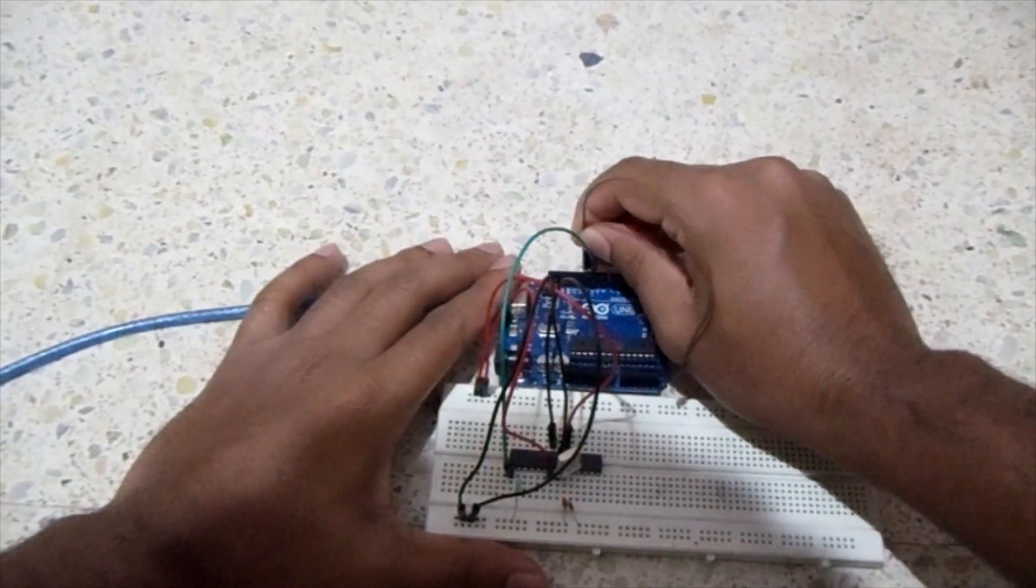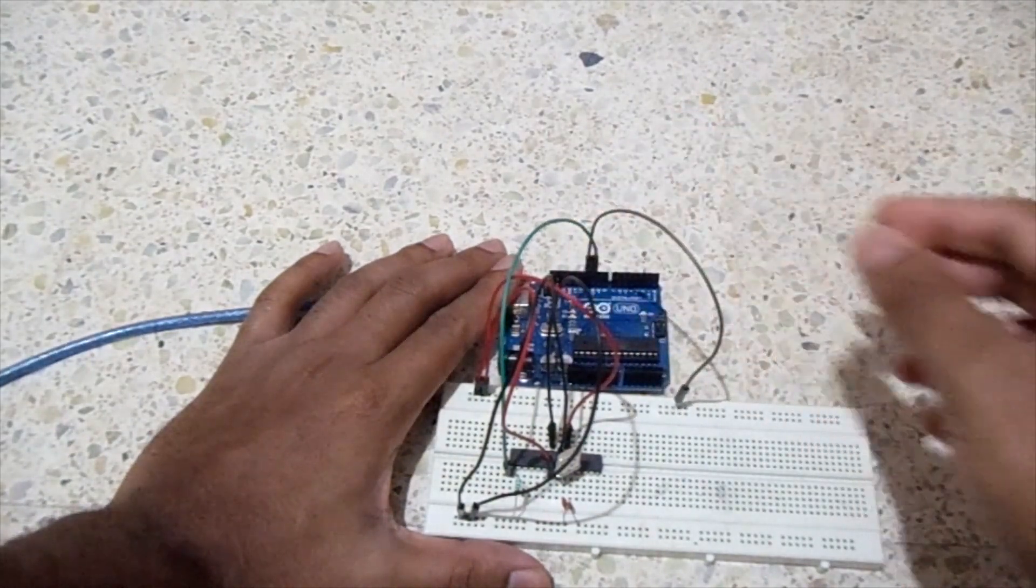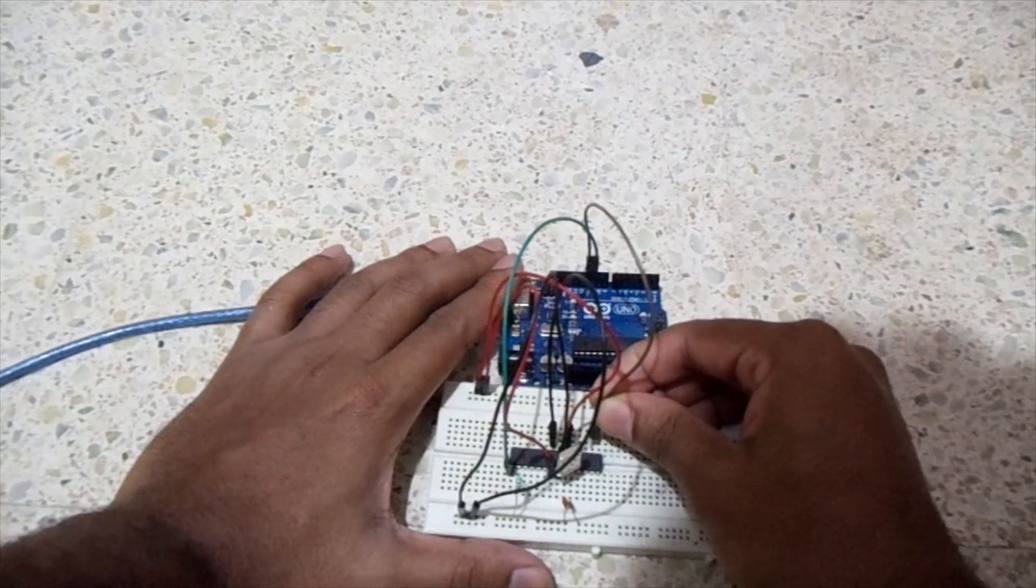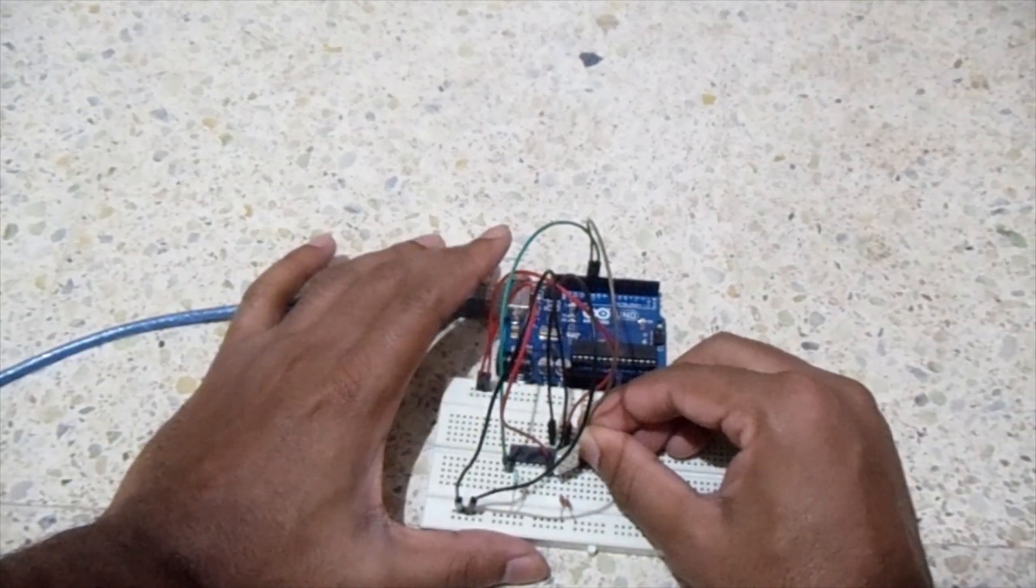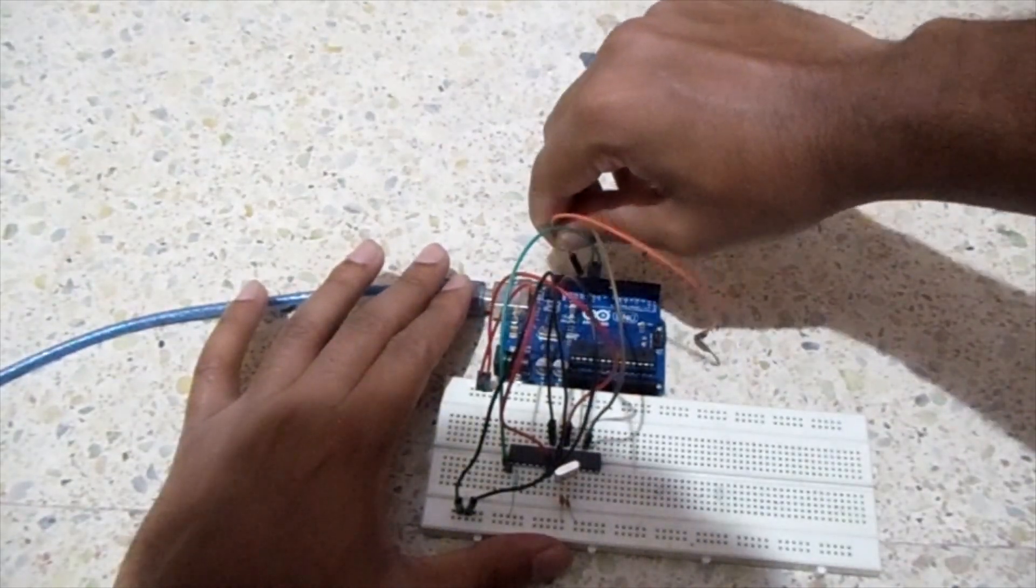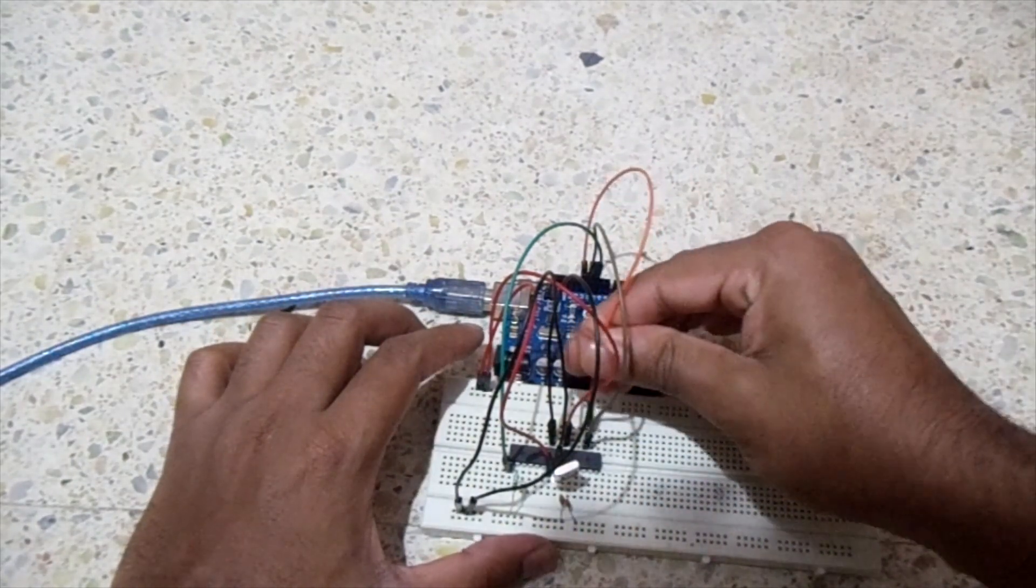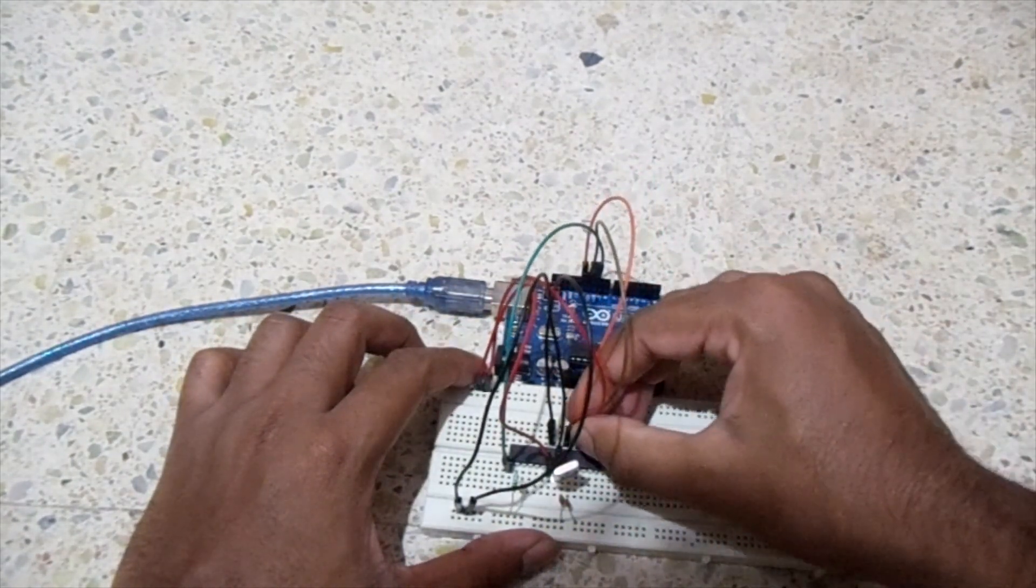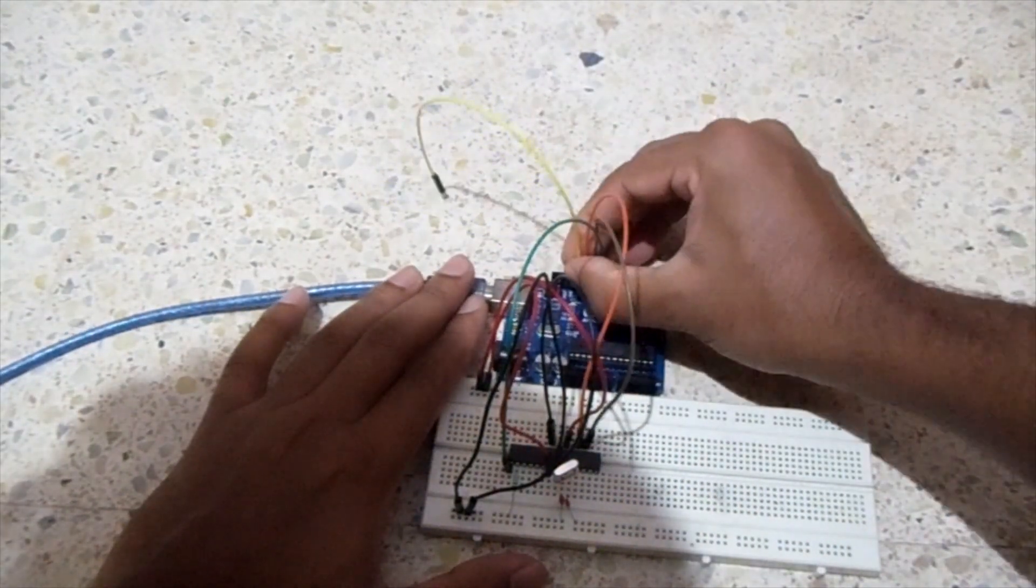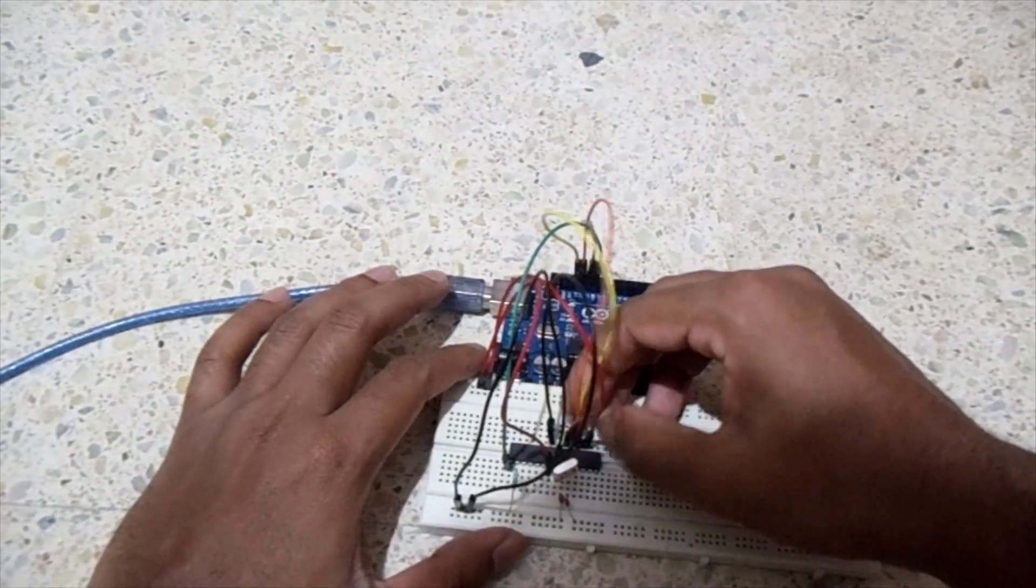From Arduino Uno pin number 11, connect to pin number 17 of ATmega328P. From Arduino Uno pin number 12, connect to pin number 18 of ATmega328P. From Arduino pin number 13, connect to pin number 19 of ATmega328P.